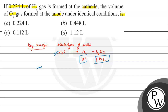Since the volume of H2 formed is equal to 0.024 liters, the volume of O2 formed would be equal to 0.024 divided by 2 liters, which equals 0.012 liters.